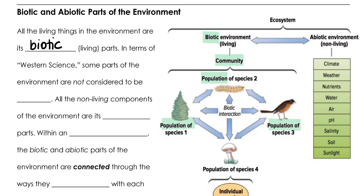In terms of western science, some parts of the environment are not considered to be alive. These are referred to as the abiotic components of the environment and include climate, weather, nutrients, water, air, pH, solidity, soil, sunlight — all the things that are required by the living components, but that are not alive themselves.